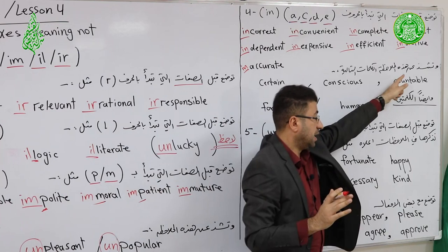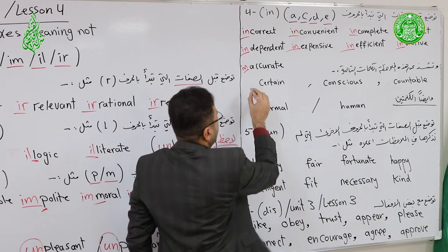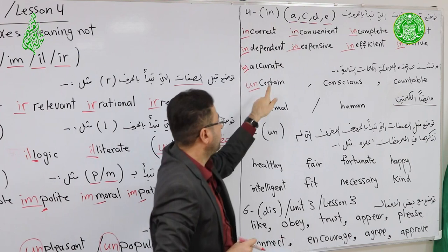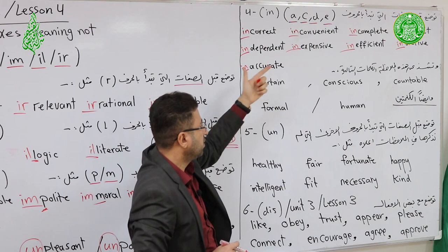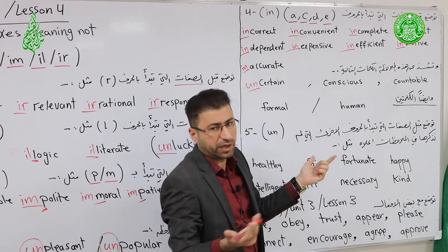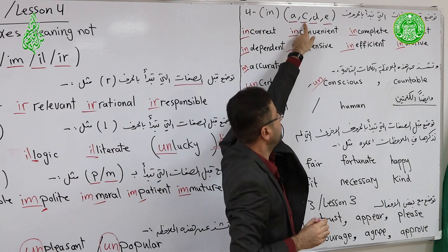However, there are exceptions to note four. Certain (متأكد) starts with C, so normally we'd add IN, but Certain is irregular — we say Uncertain, not Incorrect. Conscious (واعي) also starts with C, but we say Unconscious, not Inconscious.